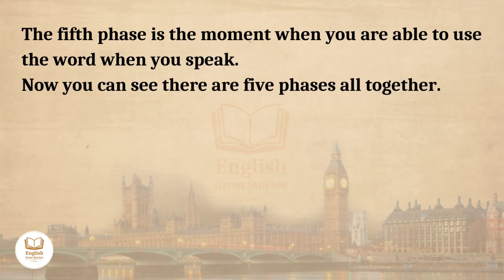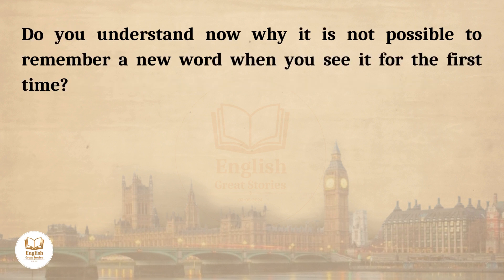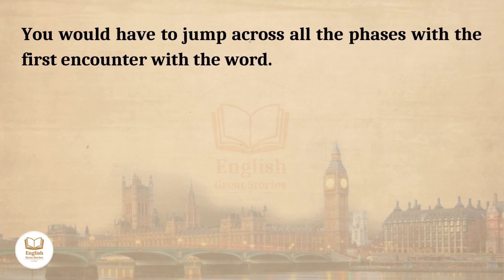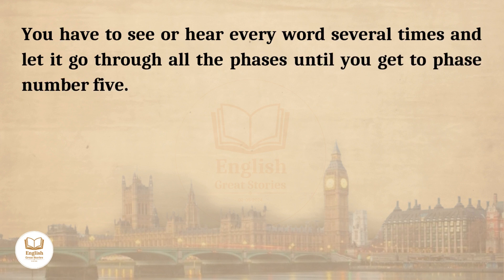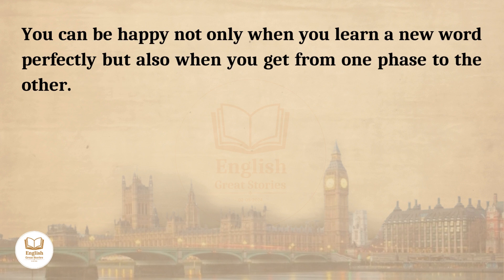The fifth phase is the moment when you are able to use the word when you speak. Now you can see there are five phases altogether. Do you understand now why it is not possible to remember a new word when you see it for the first time? You would have to jump across all the phases with the first encounter with the word. You have to see or hear every word several times and let it go through all the phases until you get to phase number five. You can be happy not only when you learn a new word perfectly, but also when you get from one phase to the other.